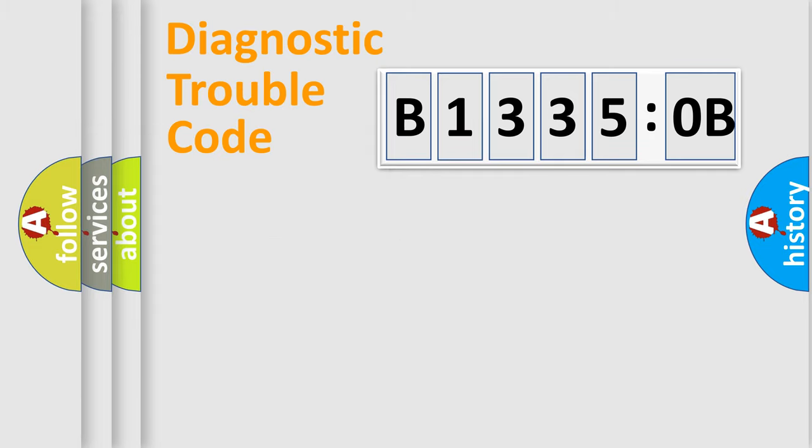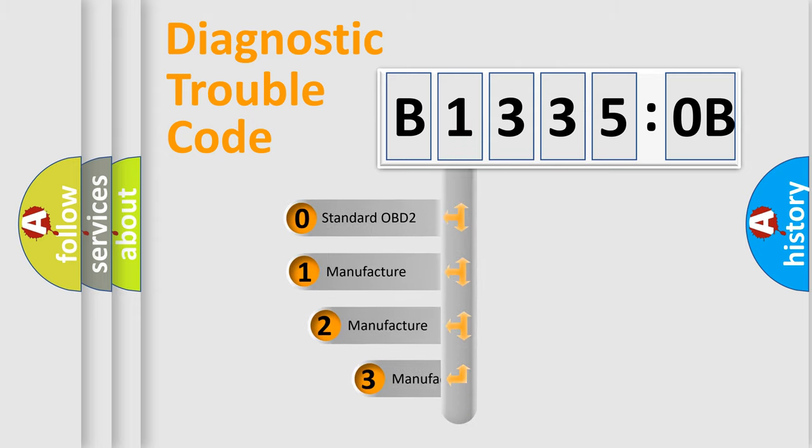Powertrain, Body, Chassis, Network. This distribution is defined in the first character code.